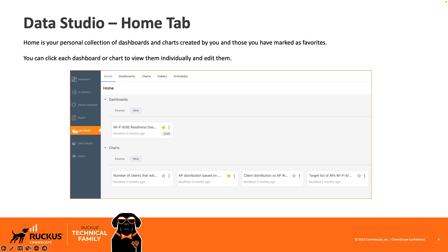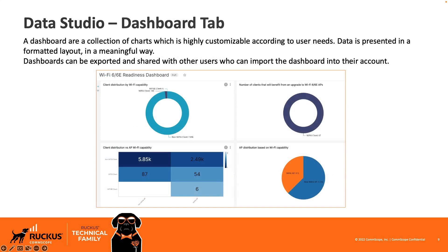The home tab is a personal collection of your dashboards and charts that you've created and those you've marked as favorites. By clicking the star on any chart or dashboard, you can add it to your favorites, which shows up in your home tab under the favorites section. Anything you've created shows up on the mine tab within the home tab. Next is the dashboard tab — a collection of all the dashboards published within your analytics instance. A dashboard is simply a collection of charts that you've created, someone else has created, or ones you've imported, all added into a customized dashboard.